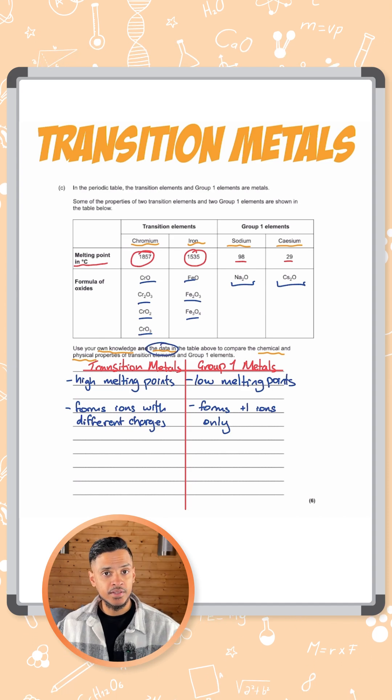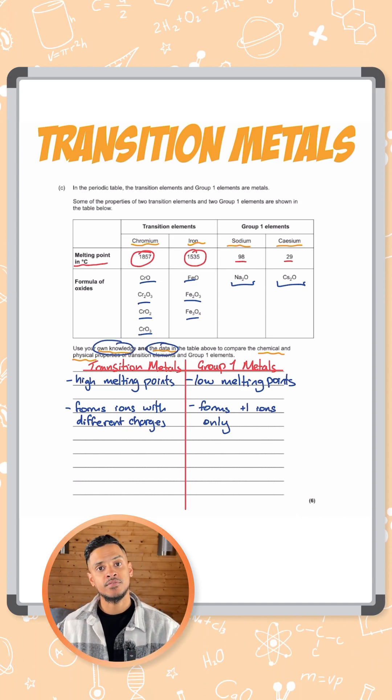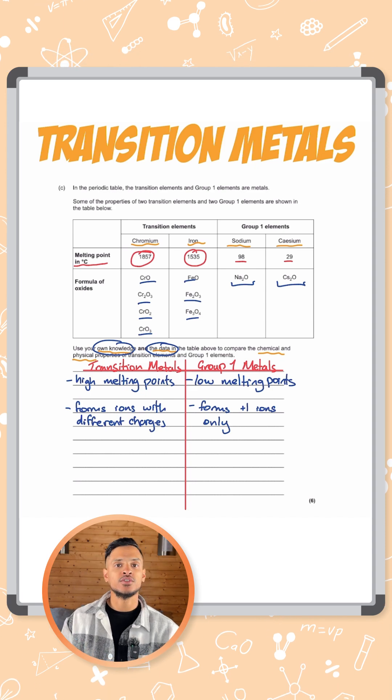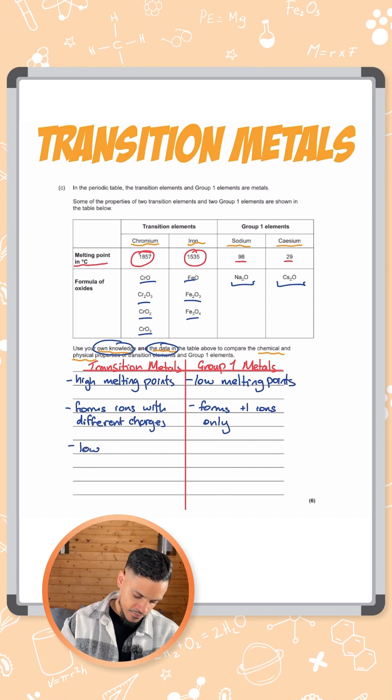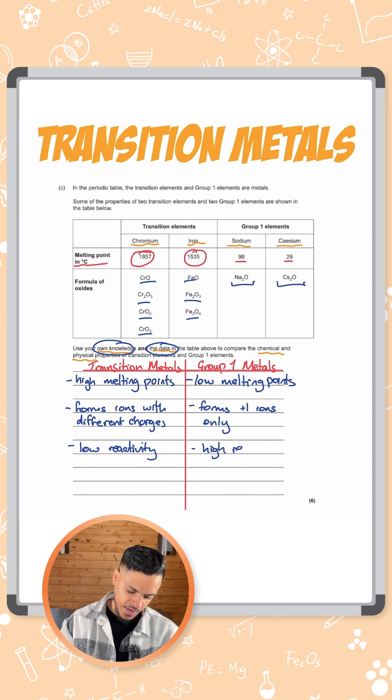So we've covered the data that they've given us so now we need to use our own knowledge to add some more stuff to this answer. So other things we can talk about is the reactivity. Transition metals have a low reactivity whereas the group one metals have a high reactivity.